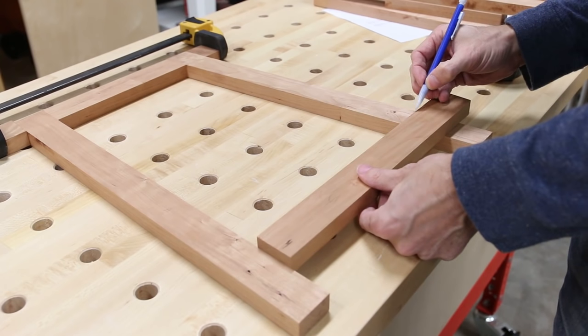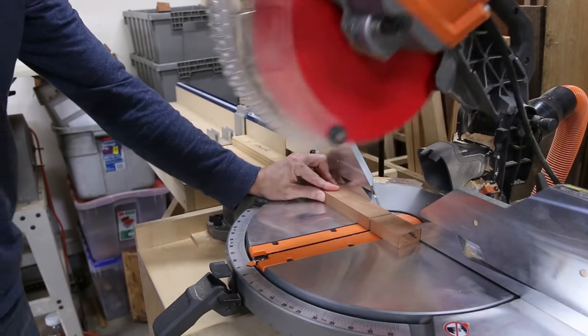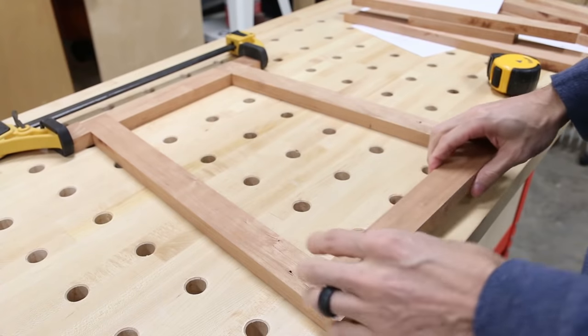I marked where the cut needed to be and then I made a couple of cuts on the miter saw to get there. Now don't try and nail it all at once, because you'll likely overshoot it. Just sneak up on the cut.